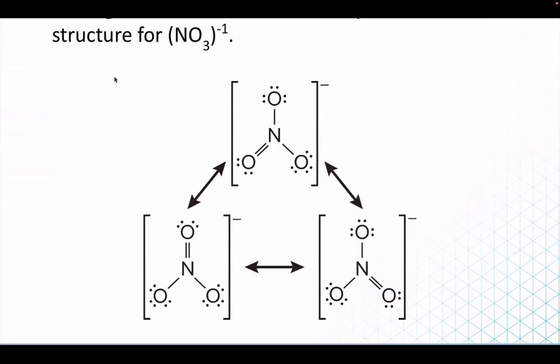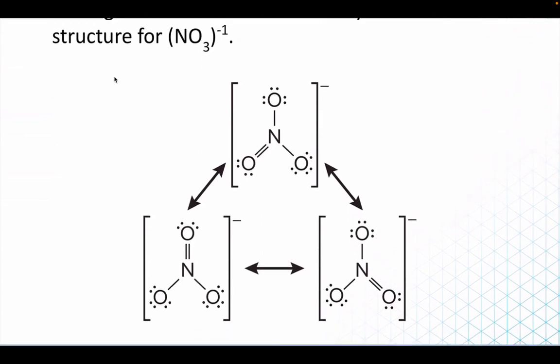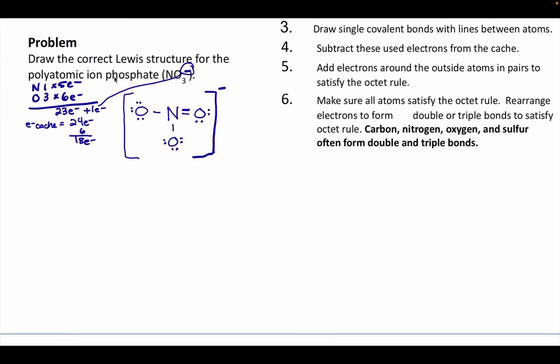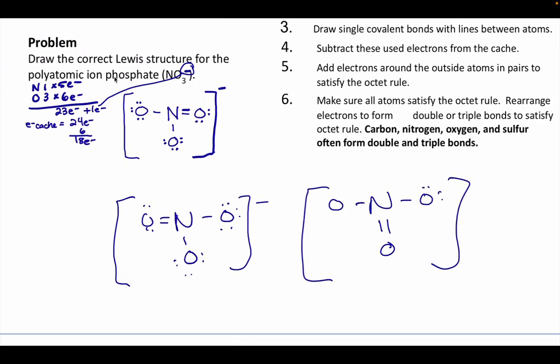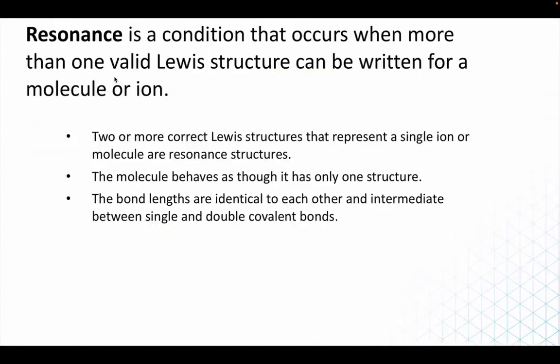Here's that same nitrate ion. They drew it at different angles, but all three of those are correct. For us, we put the double bond, but we could have done this. Or if we wanted, we could do this. Don't forget your negative. That is all I have.